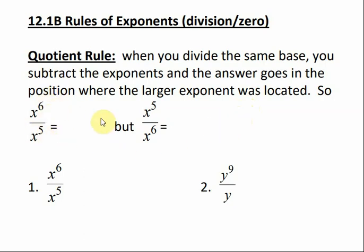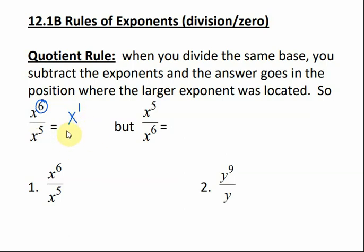For example, we have x to the sixth divided by x to the fifth. We have the same base, so we're going to have the same base for our answer, and we're going to subtract the two numbers. Six minus five is one. Our answer goes where the largest exponent was located. We have the larger exponent on top in the numerator, so my answer is going to be in the numerator. And if it's got a one for the exponent, we don't need to write it, so my answer would just be x.